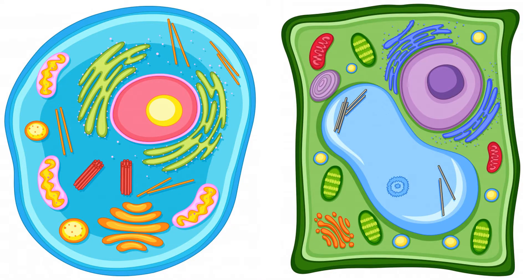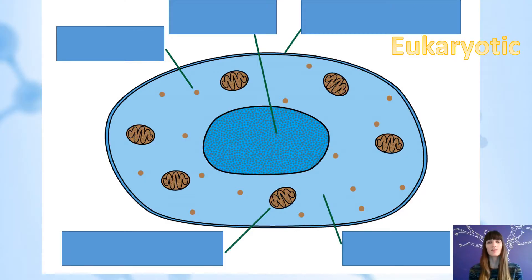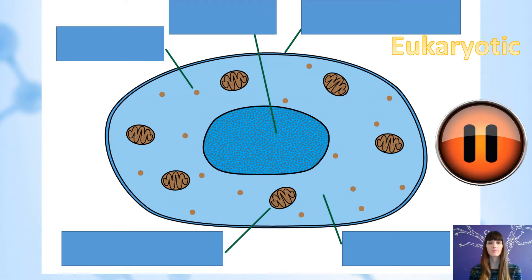Now looking at cells — animal and plant cells in particular. Most of you will be familiar with this, maybe not all of the bits in these diagrams, but you don't need to know all of them. This is an animal cell and an animal cell is what we call a eukaryotic cell, and I'll talk about what that word means in just a second. I want you to pause the video again — I'd like you to draw this cell and label it for me. Okay, let's go through the answers.